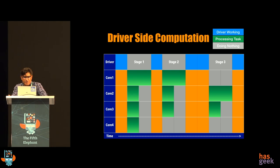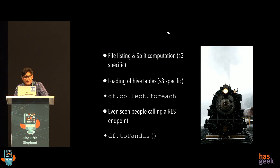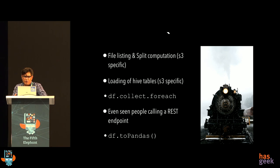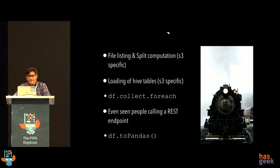The first principle is: minimize your driver-side computation. What do we do in the driver? One common thing is file listings — especially for large tables partitioned by date, we've seen thousands or even 100,000 files being listed in S3. This is not a big problem on Hadoop where name node operations are fast, but on S3, listing can take a lot of time. At QBOL, we've invested heavily in making file listing better for S3. The second reason is loading of Hive tables — Spark writes to a temporary directory, then copies files to the final table location.